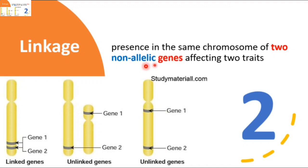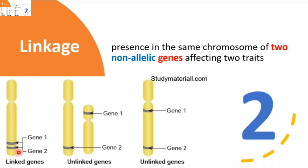Second, these genes are non-allelic, meaning they are not behaving as alleles to each other. As you can see, genes 1 and 2 in the first chromosome do not share the same locus or location in the chromosome.